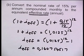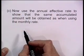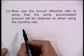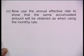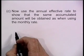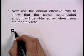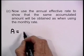Last thing — let's do the same and see what happens if we now use the annual effective rate over a period of three years rather than 36 months. We'll use the annual effective rate to show that the same accumulated amount will be obtained as when using the monthly rate. So let's go to the formula.